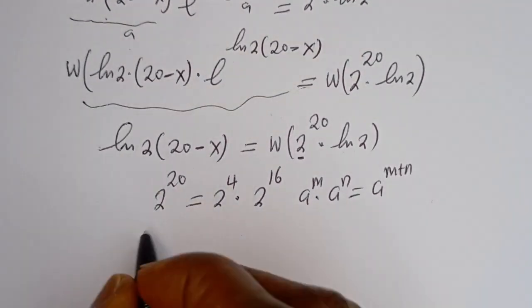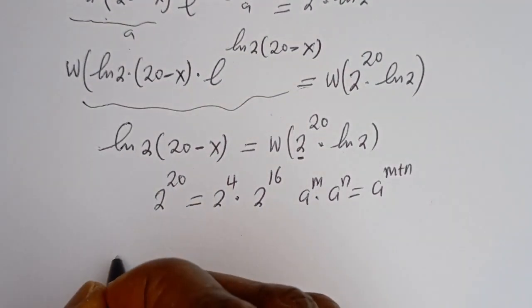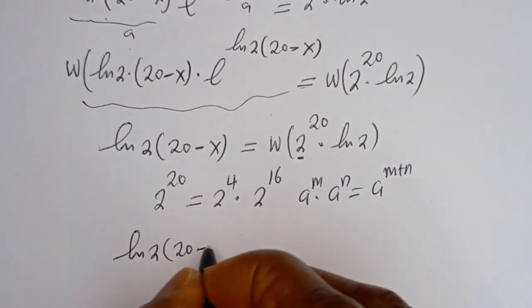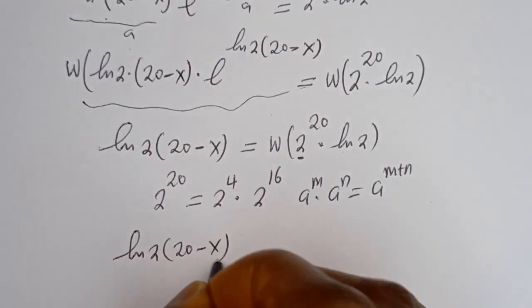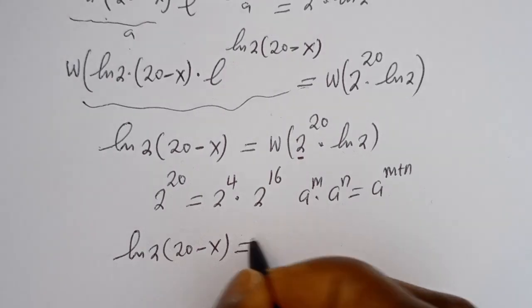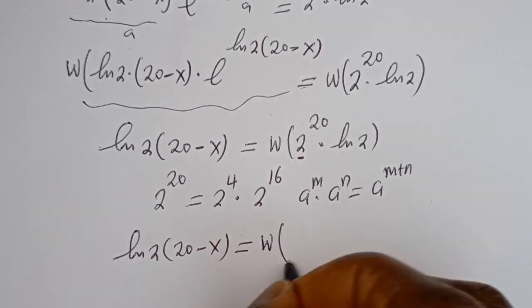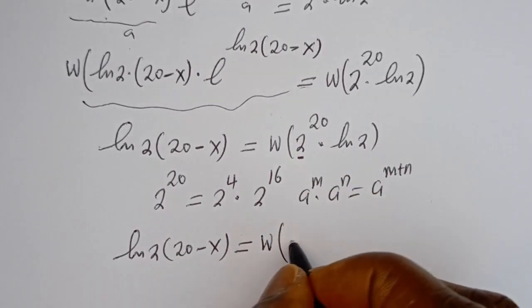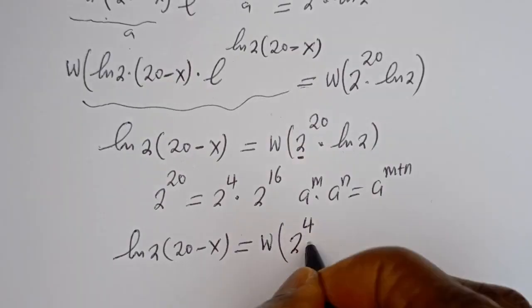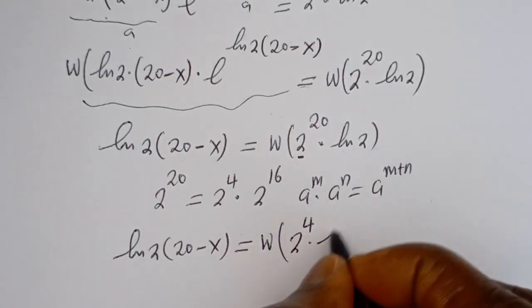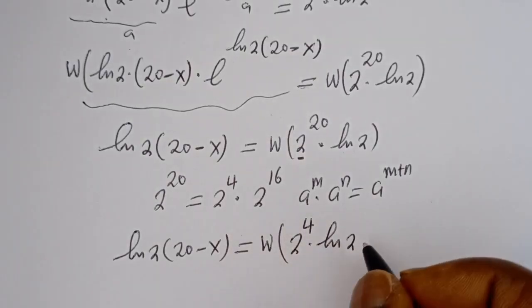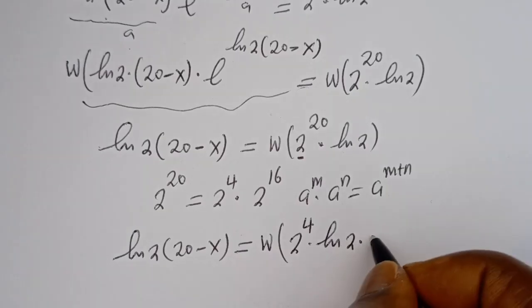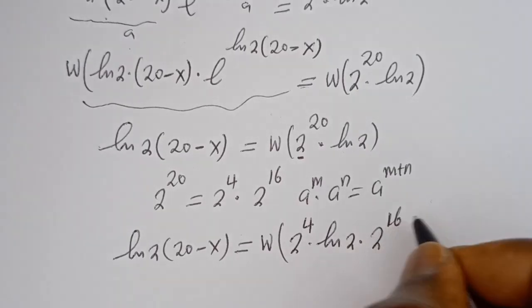We can simplify the right-hand side. Using the exponent rule a to the power of m times a to the power of n equals a to the power of m plus n, we write 2 to the power of 20 as 2 to the power of 4 multiplied by 2 to the power of 16. Then W of 2 to the power of 20 times ln of 2 becomes W of 2 to the power of 4 times ln of 2 times 2 to the power of 16.